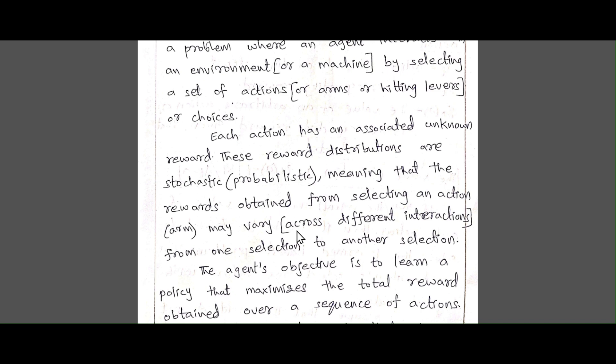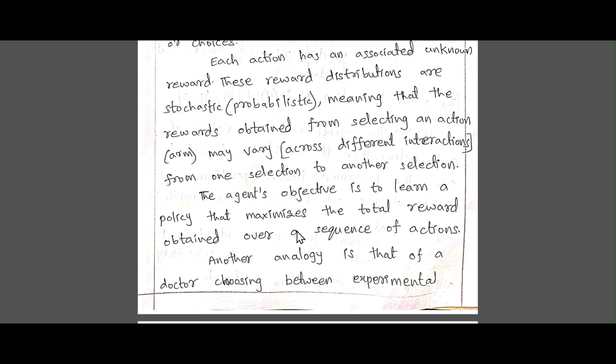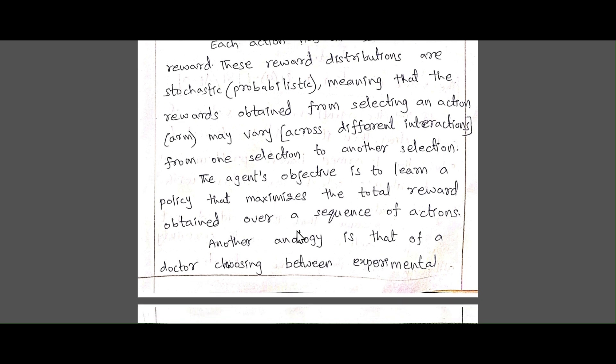These reward distributions are stochastic, meaning random. No one knows which action is going to yield which reward. Rewards obtained from selecting an action may vary across different interactions — from one selection to another. If you select once you may get higher, the next time you may get lower. That is random. There is no guarantee that you will always get a good reward; it produces random rewards.